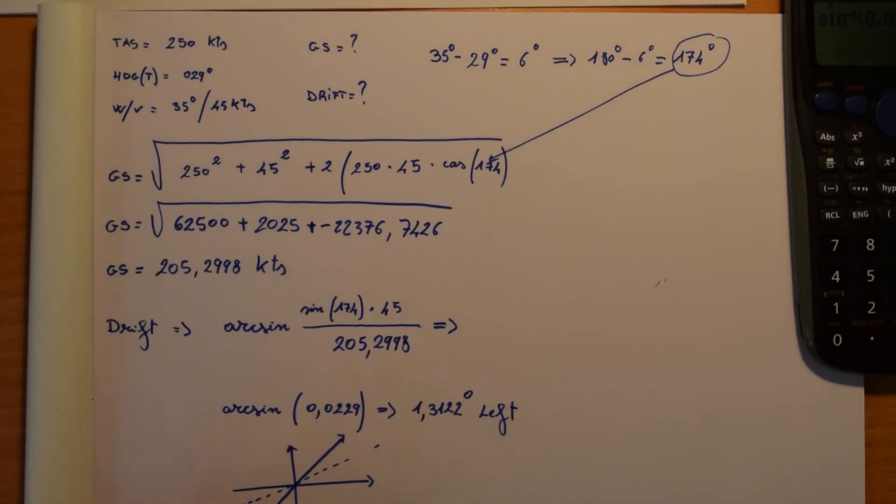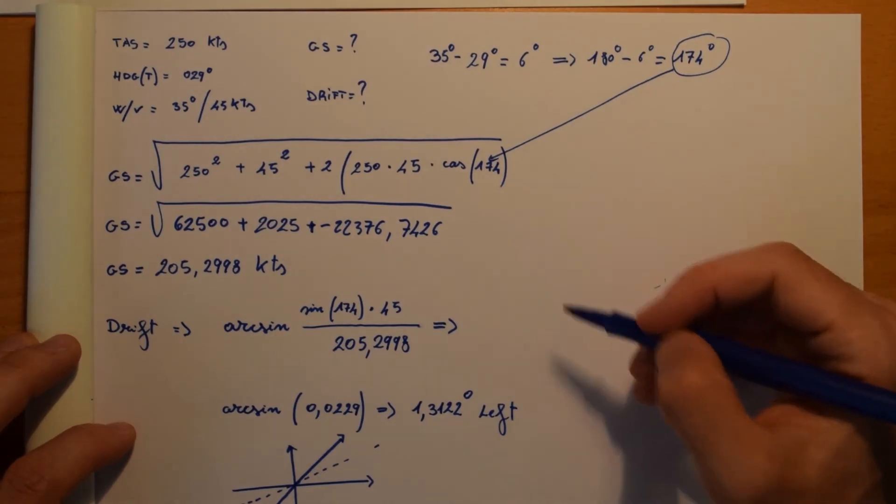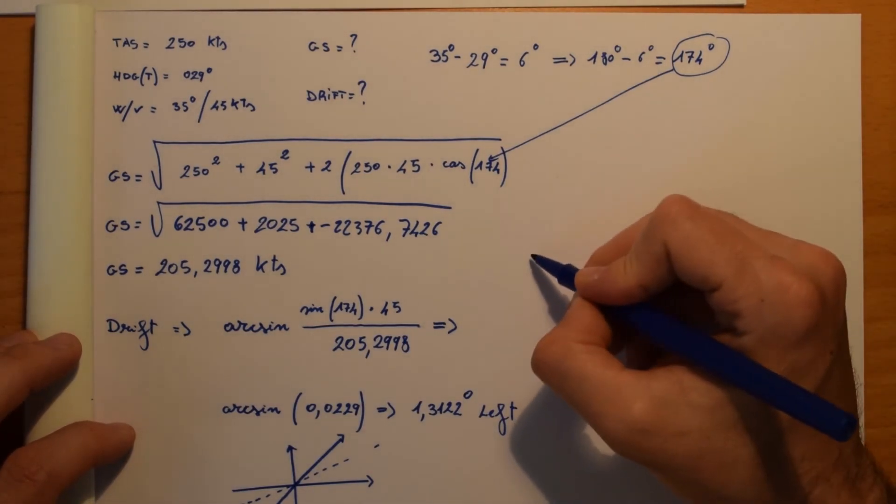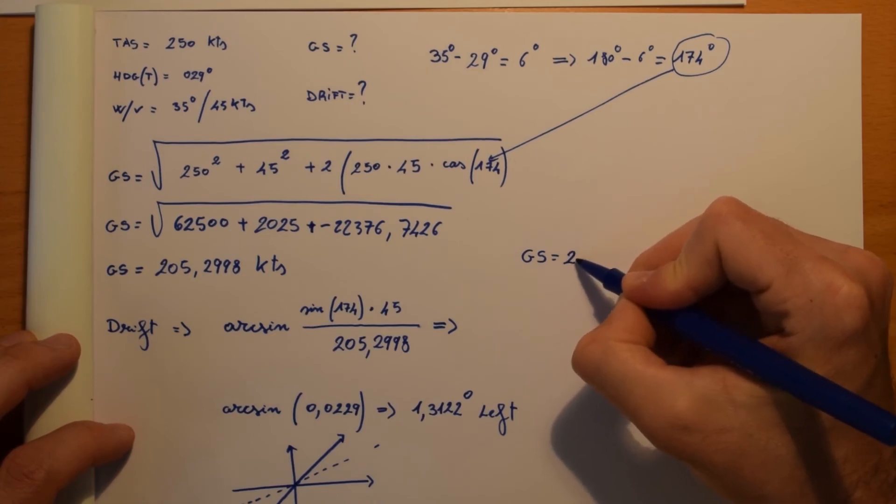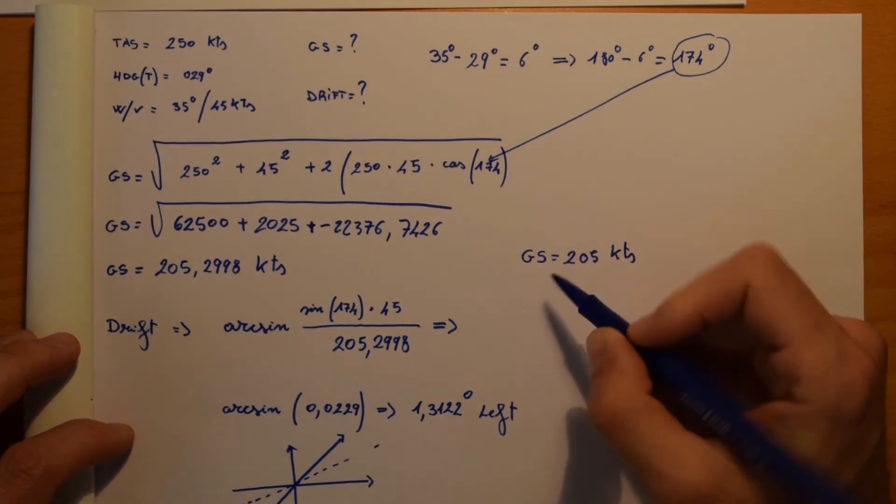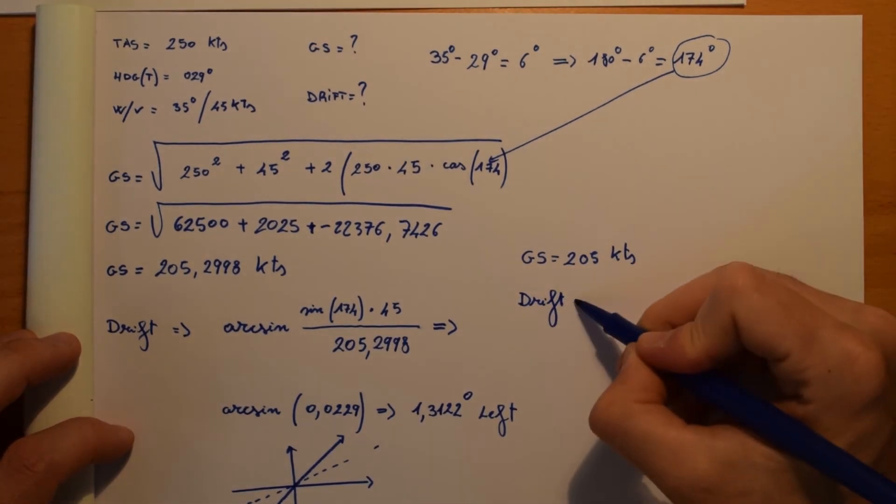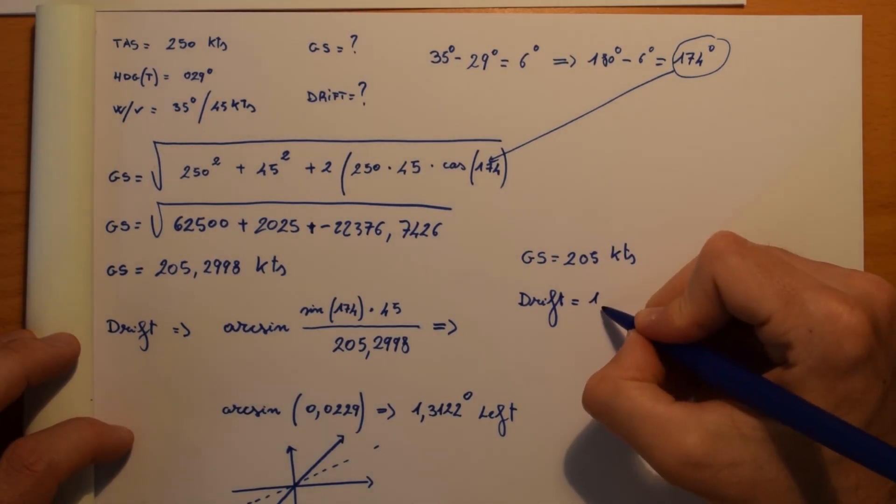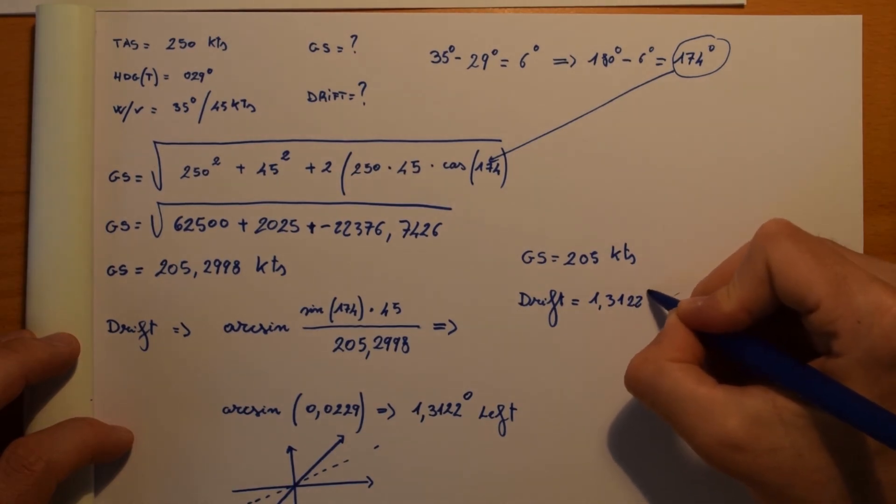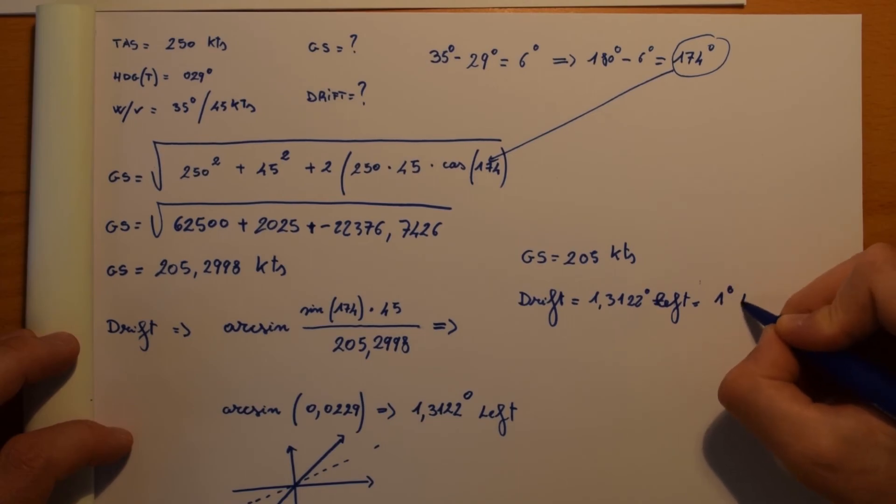And now we have finally found out all the values the question was asking us. We know that ground speed is 205 knots and our drift, let's say left, is 1 degree left.